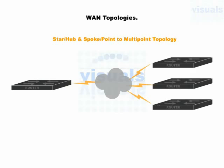Next is the star topology for wide area networks. This topology works the same as how star topology works for local area network, but for wide area networks it has different names. It is also known as hub and spoke topology, and also as point-to-multipoint topology. Each WAN device connects to a center point using a WAN connection, forming a star. One WAN device acts as the center point, and this topology is used most for implementing wide area networks.